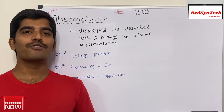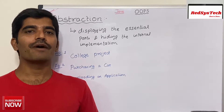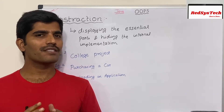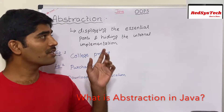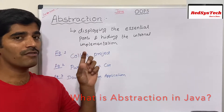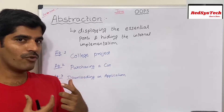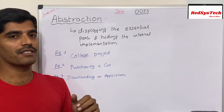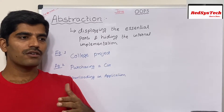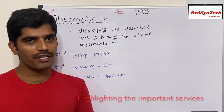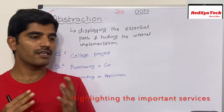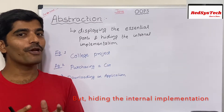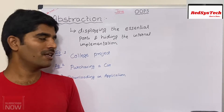Hello everyone, welcome to RD Statistic channel, myself Karthik. Today we are going to look at what is abstraction in Java. Abstraction is nothing but a process of displaying only the essential portion of our implementation but not the internal implementation — meaning it's the service of providing only the important things but not showing the internal implementation.